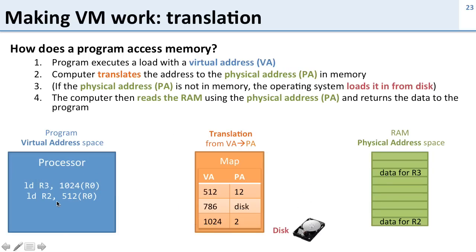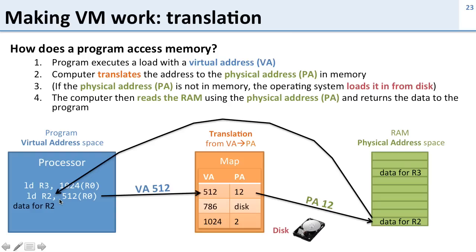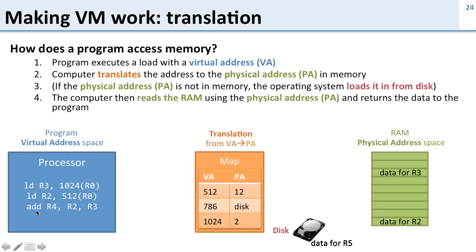Now we do another instruction that is going to load virtual address 512. We go to our translation and ask it where 512 goes. It says it goes to physical address 12. So we go to physical address 12, get our data, and send it back. Then we do another instruction — this is an add instruction using only registers, so we don't need any translation here. Then we have another instruction that is going to access virtual address 786.